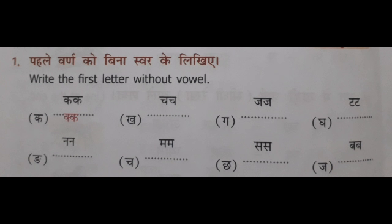The first exercise: 'Pahale Varn Ko Bina Svar Ke Likhiye' — Write the first letter without vowel. Here are the first letters of the words: Ka, Cha, Ja, Ta, Na, Ma, Sa, Ba. The question is to write the first letter without vowel. So: Ka will change to Ik, Cha changes to Ich, Ja changes to Ij, Ta changes to It, Na changes to In, Ma changes to Im, Sa changes to Is, Ba changes to Ib.